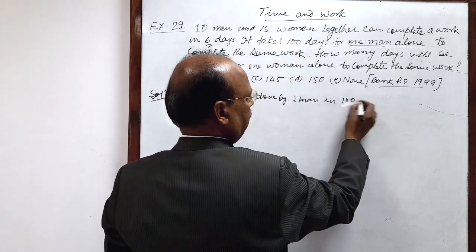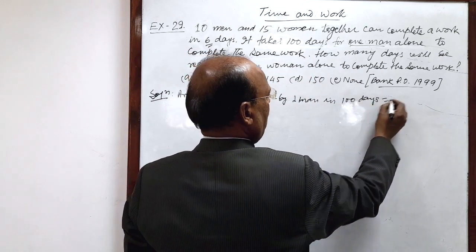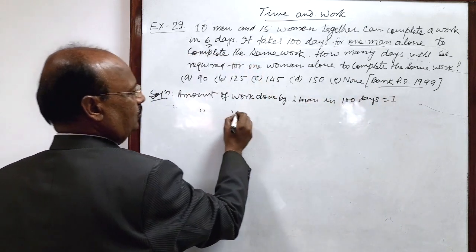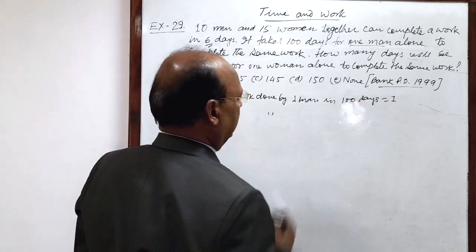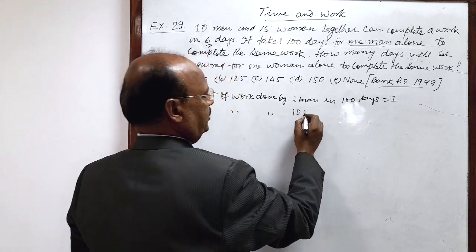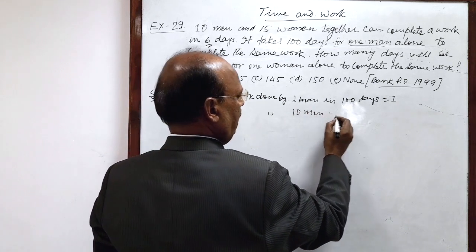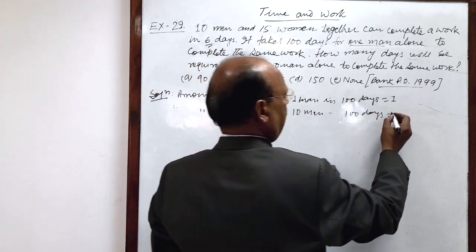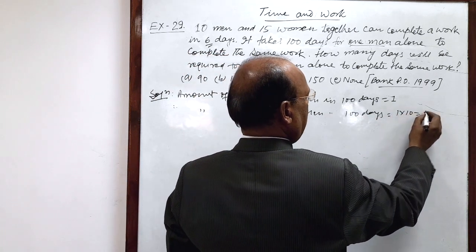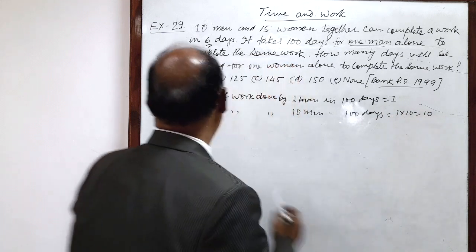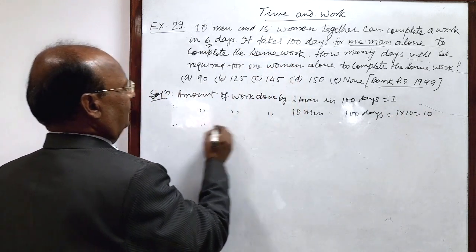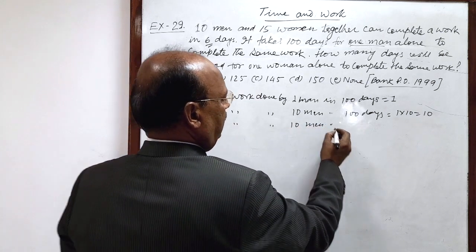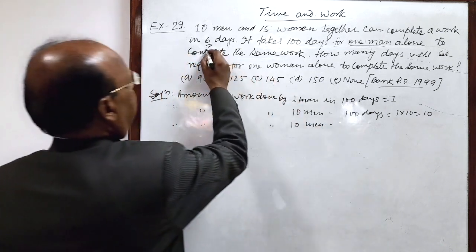So therefore amount of work done by 10 men in 100 days is 1 × 10, this is equal to 10. And therefore amount of work done by 10 men in 6 days...